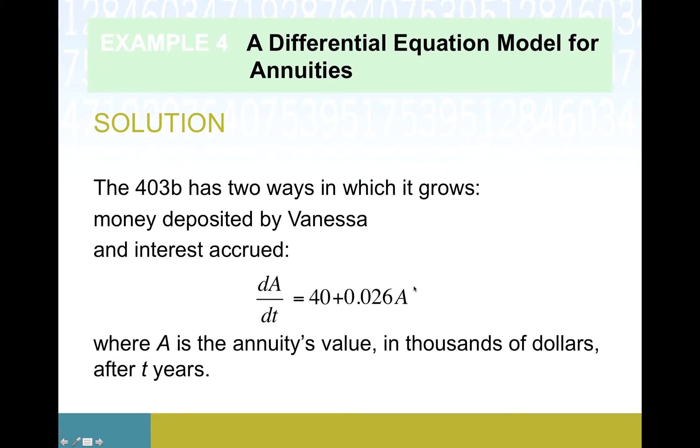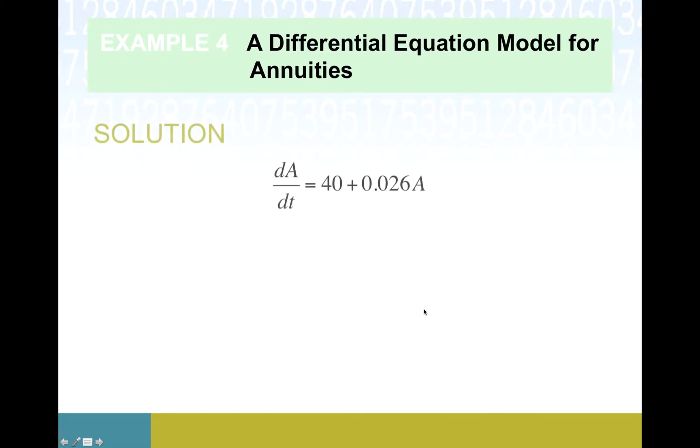So here's the making everything formal. So A is the annuity's value, how much is in this account, in thousands of dollars, just so we don't have to write the extra zeros here, and it's T years after she begins this account. So mission one is accomplished. We actually have a differential equation now.